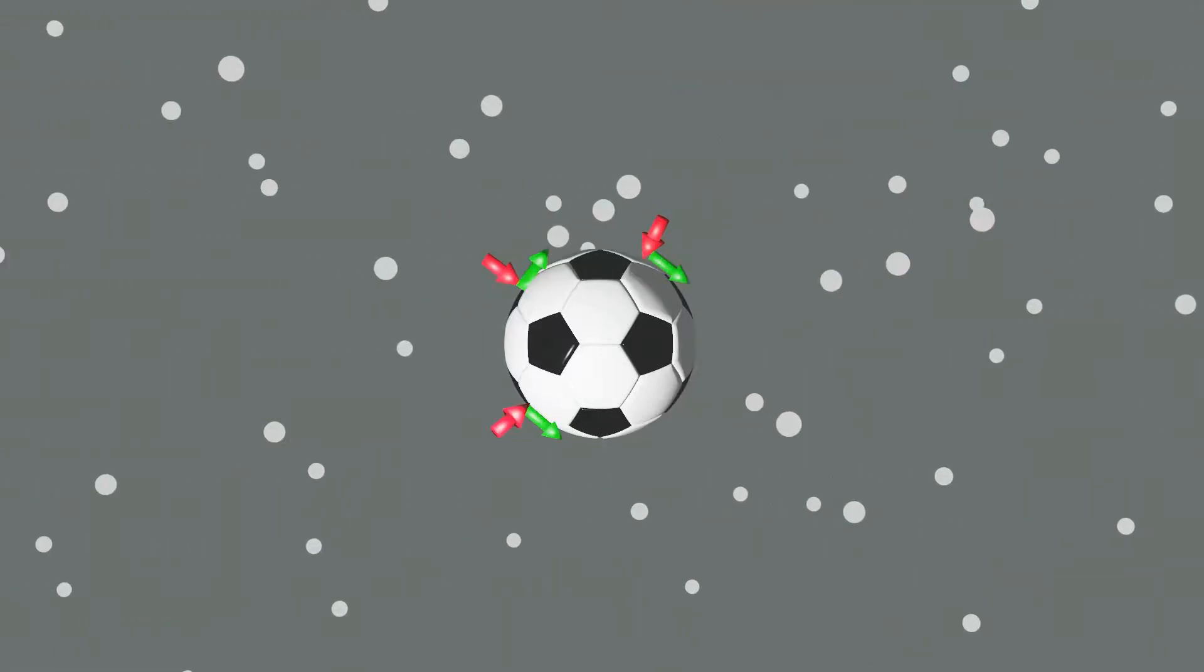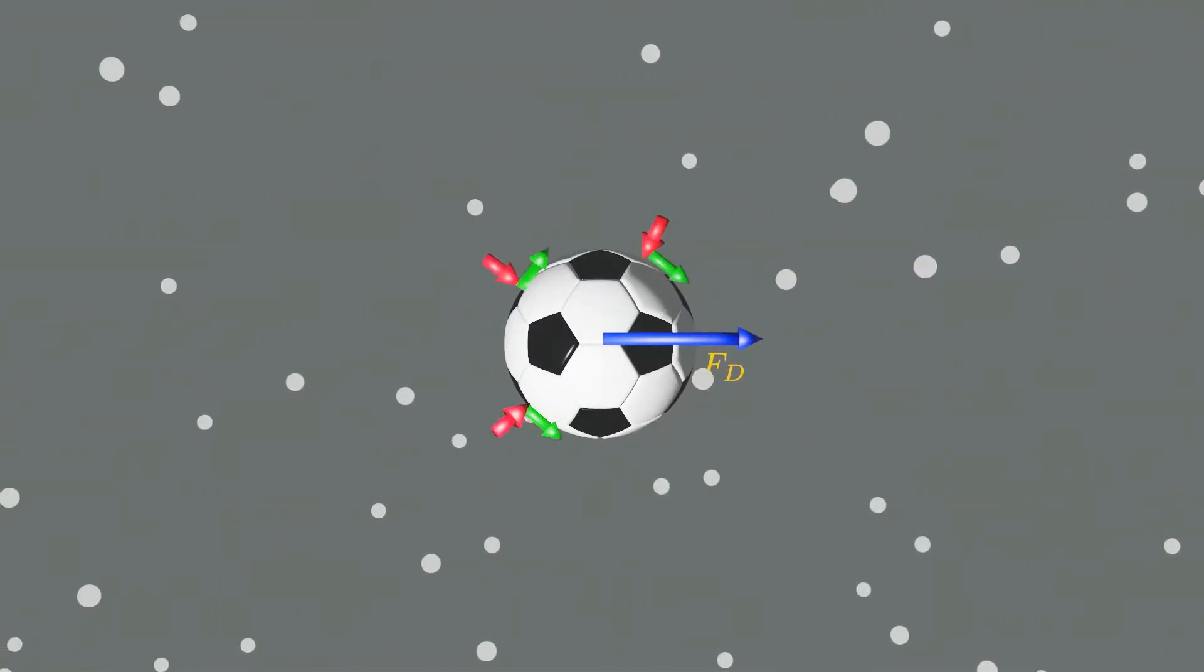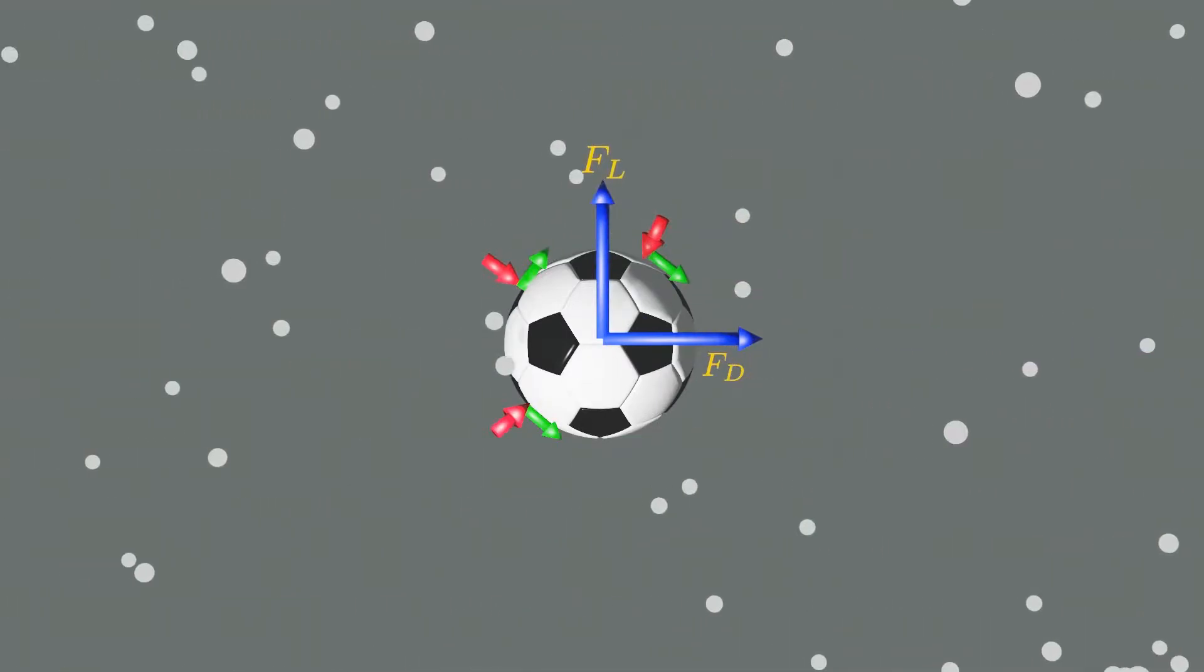The force of flowing fluid exerts on a body in the flow direction is called drag. Whereas the forces in the direction normal to the flow tend to move the body in that direction is called lift.